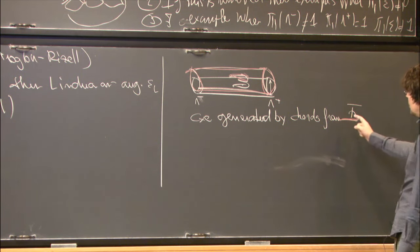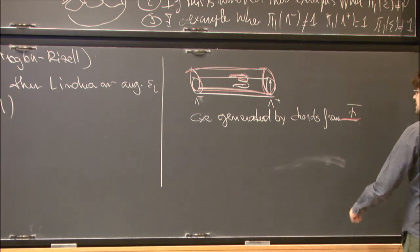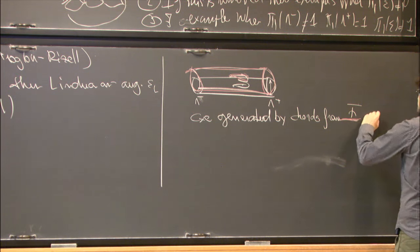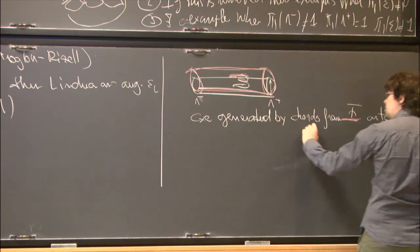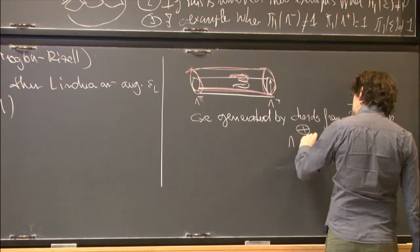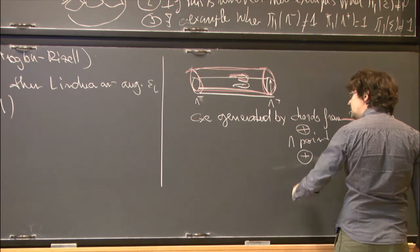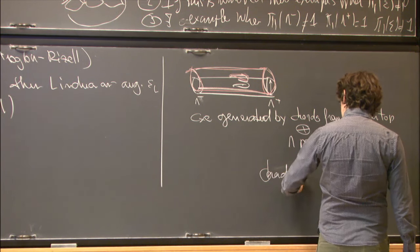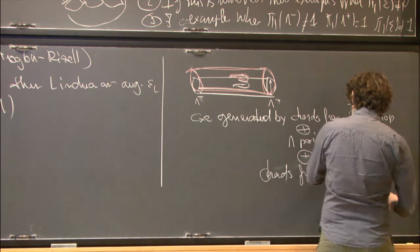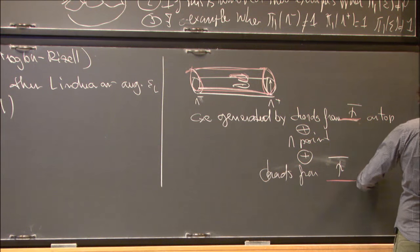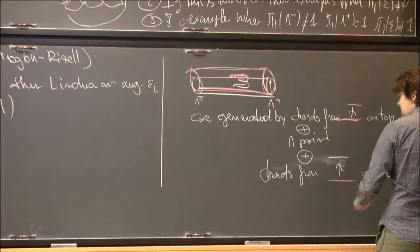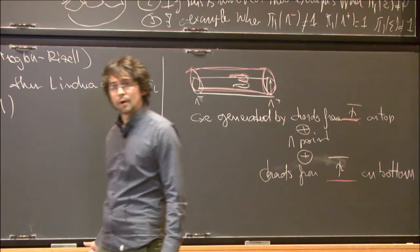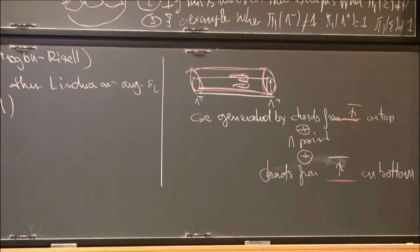We define a complex generated by: chords from the red (perturbed) copy to the white copy on the top, plus intersection points, plus chords from the red to the white copy on the bottom. We define a Floer differential involving all those objects, keeping in mind that we need to use augmentations.